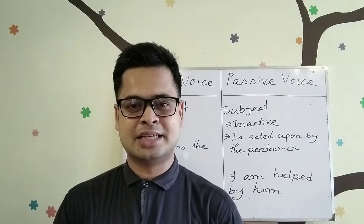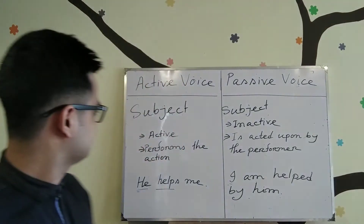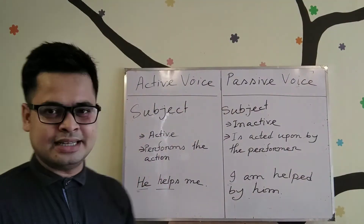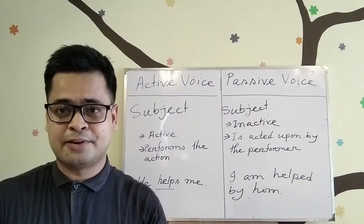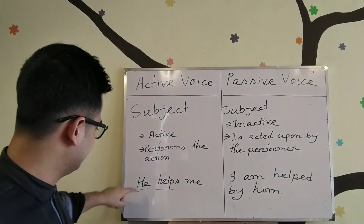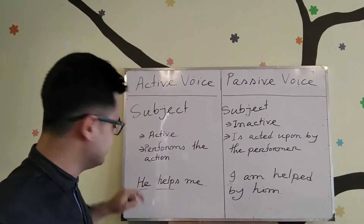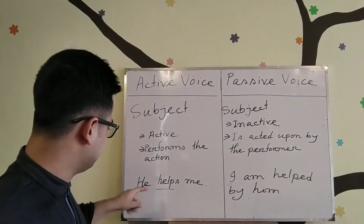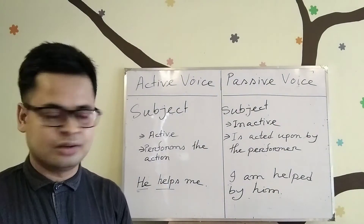Let's talk about the basic concept of active voice and passive voice. In an active voice, the subject is active — that means the subject can perform the action. For example: 'He helps me.' Here, 'he' is the subject that performs the action, and 'me' is the object.